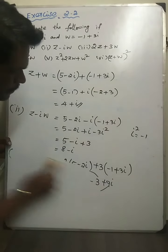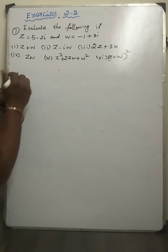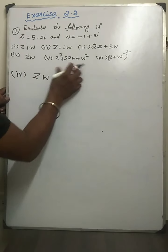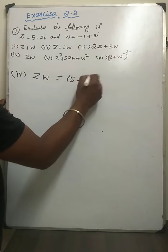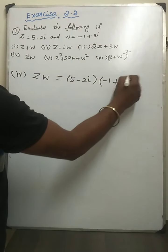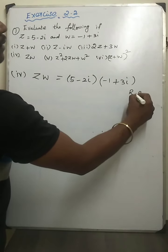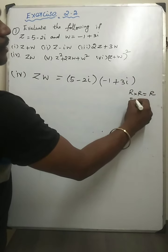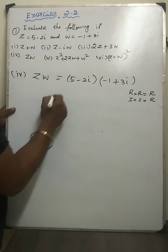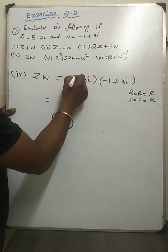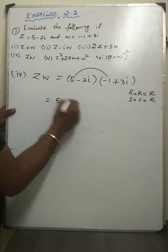Fourth subdivision: ZW, that means the product. z value is 5 minus 2i and w value is minus 1 plus 3i. Before multiplying, the rule is: real part times real part gives real part, imaginary part times imaginary part gives real part. Same sign means real part, different means imaginary part. So real part into real part: 5 into minus 1.